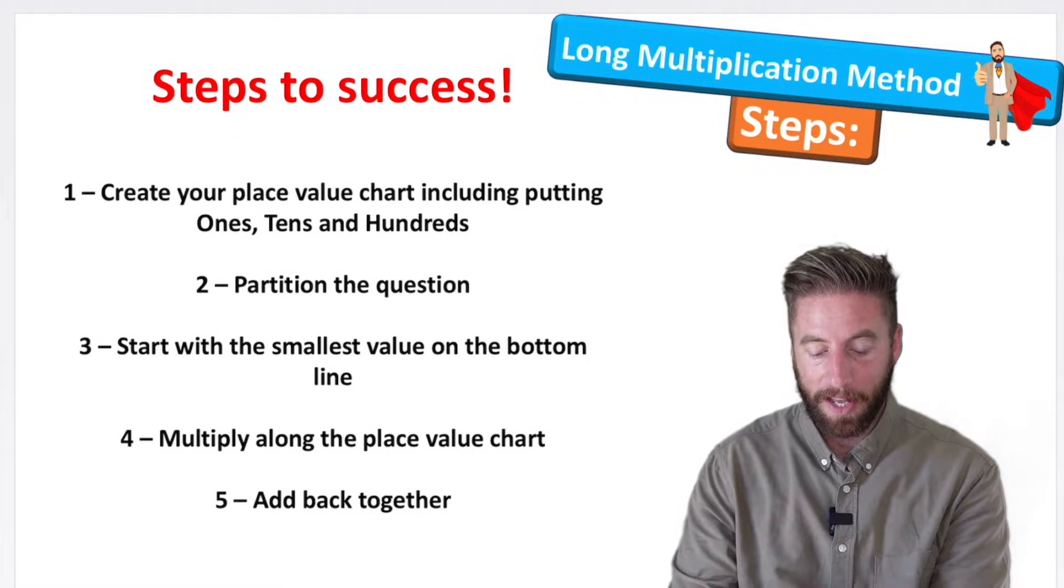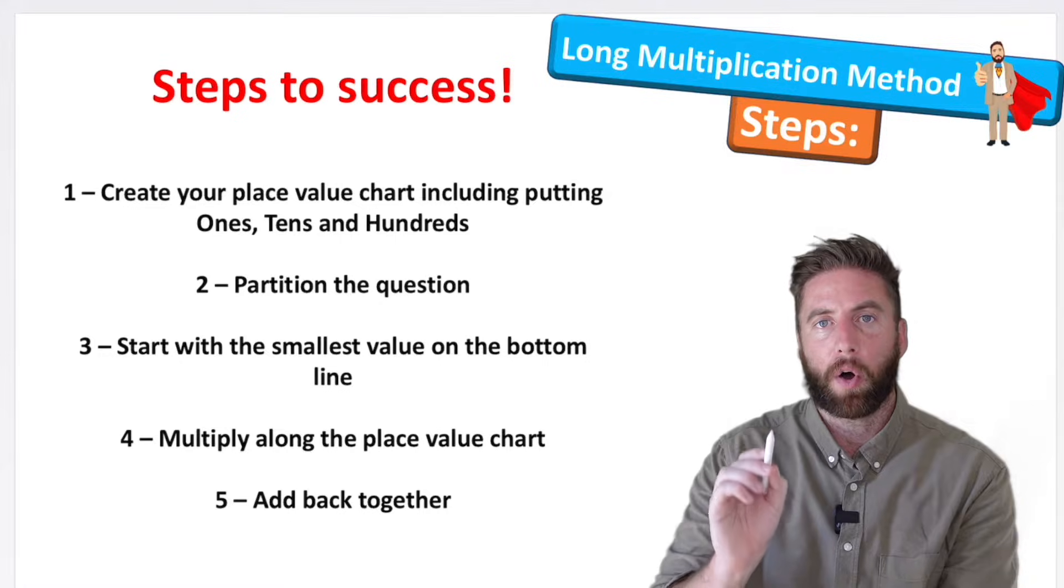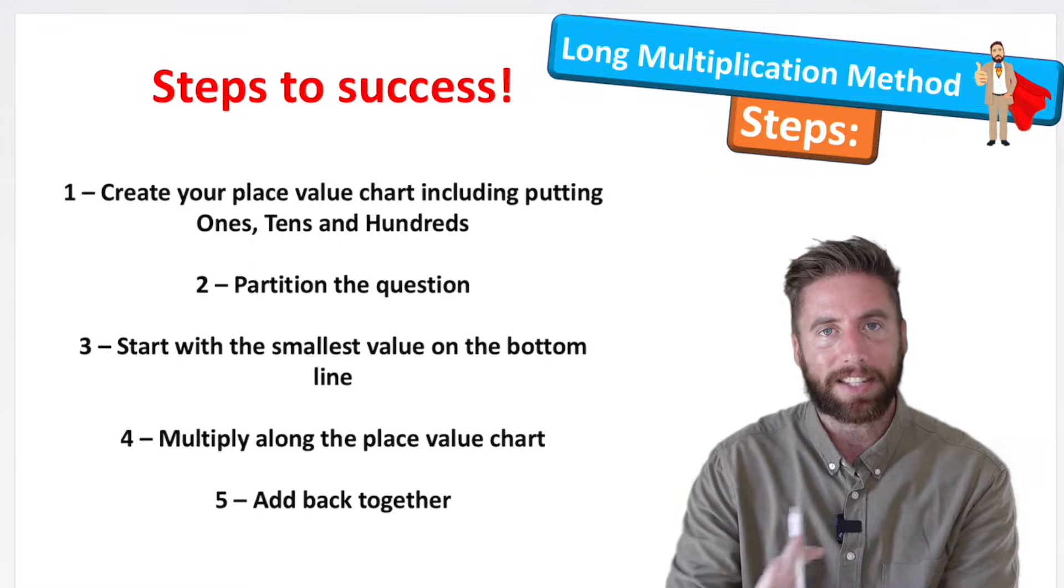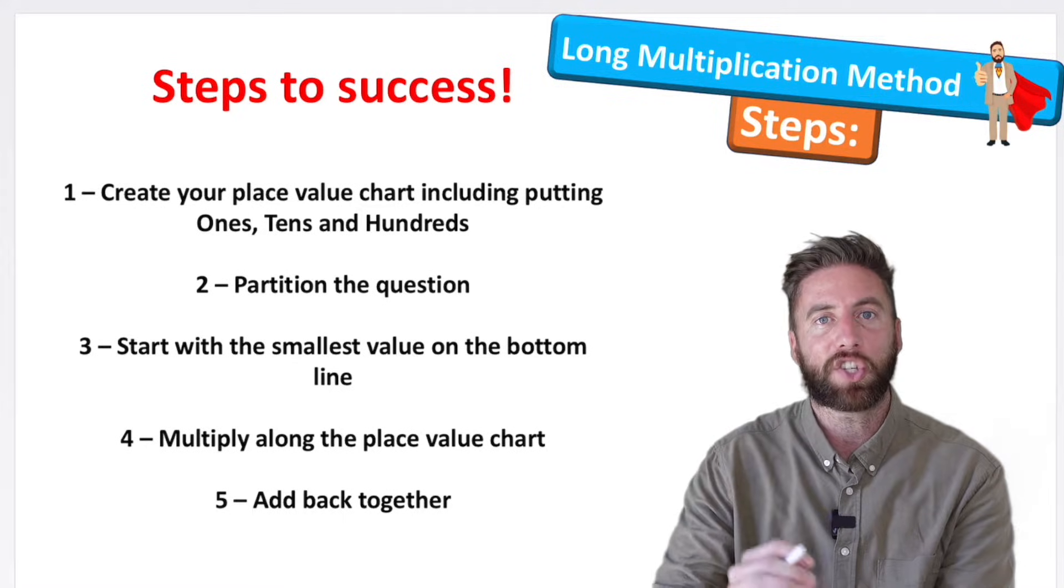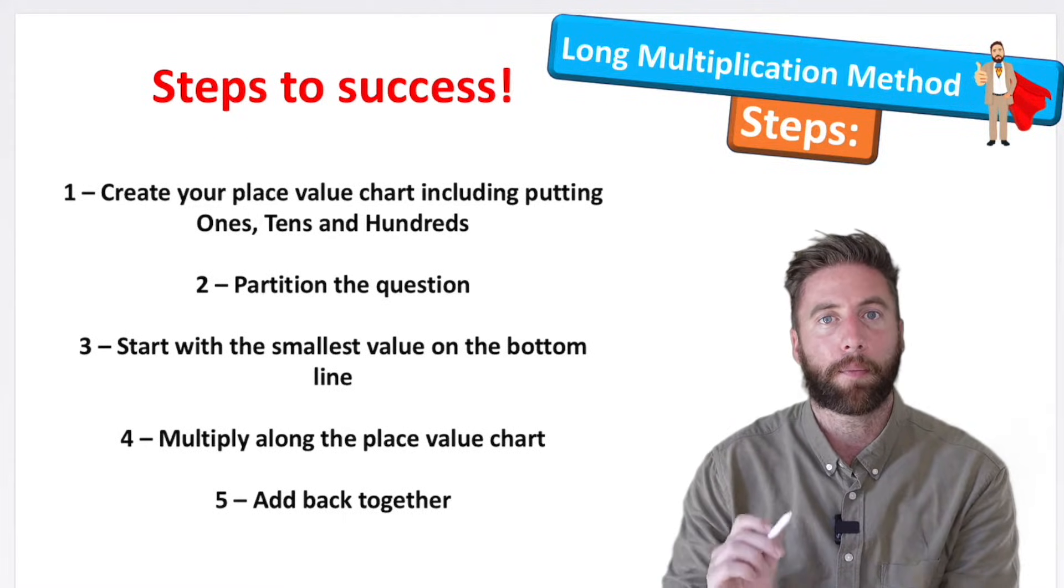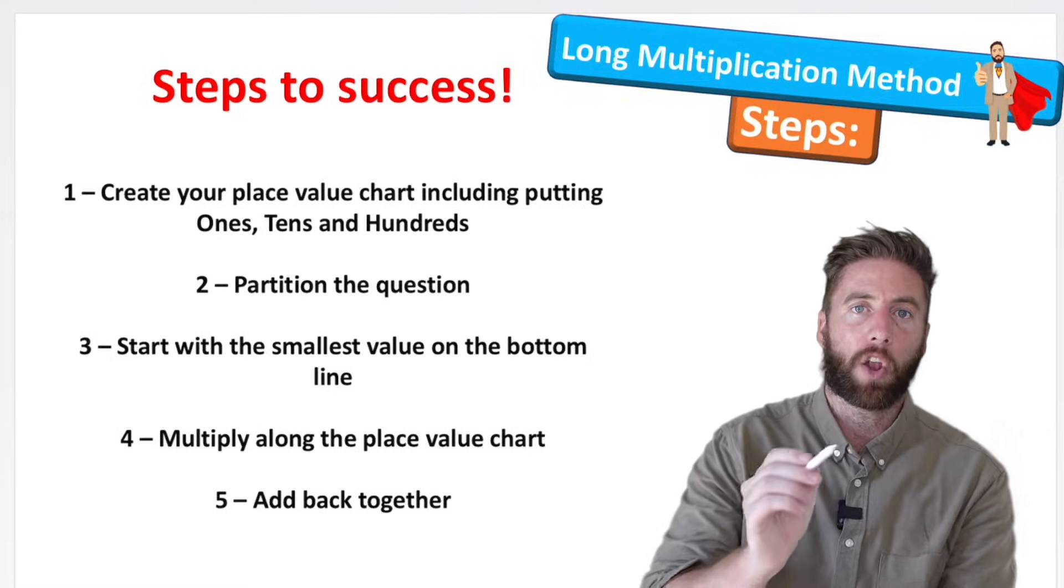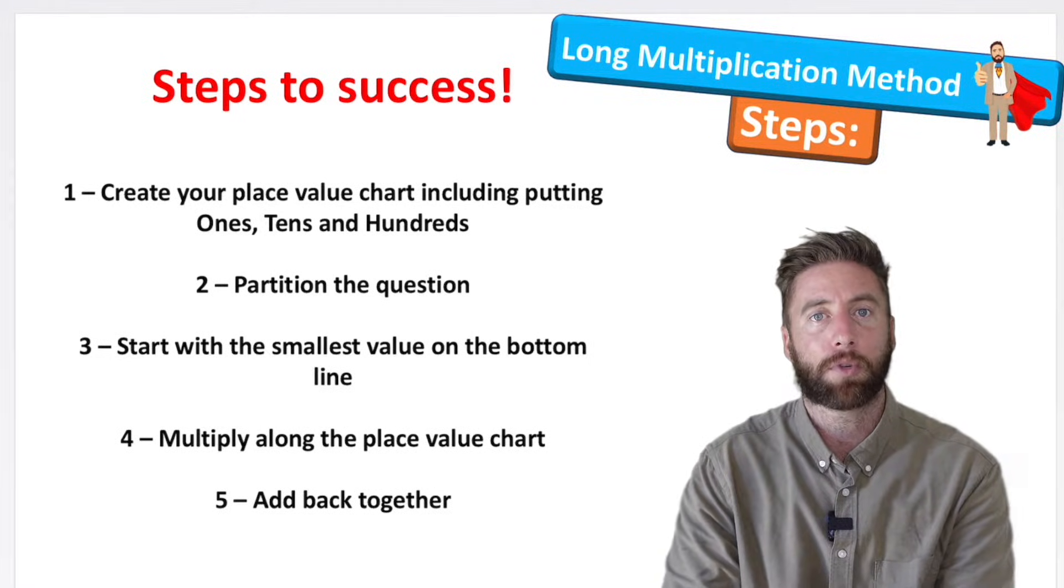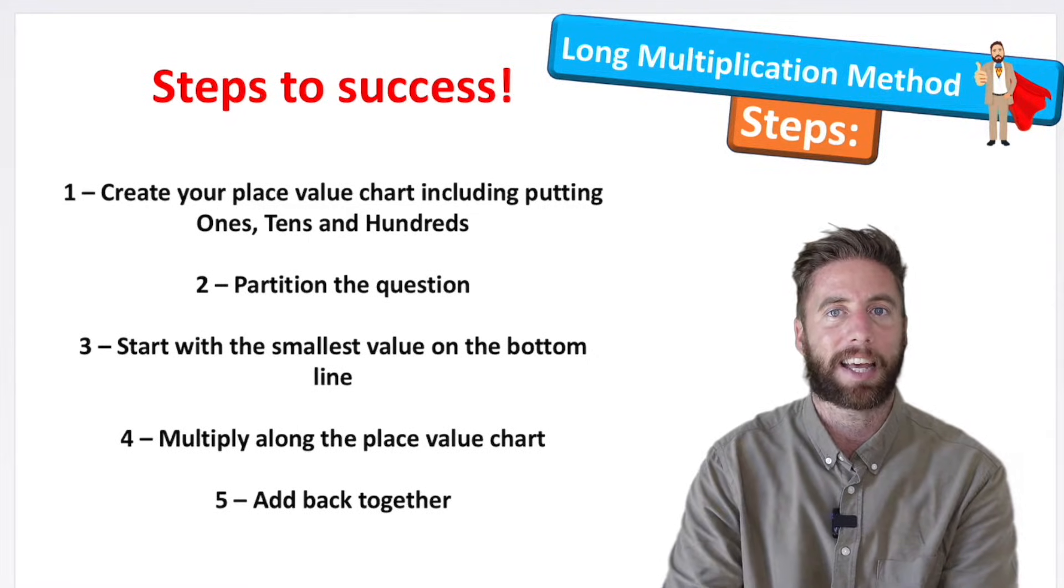Our steps to success today are: first, create our place value chart where we make sure we put our ones, tens, and hundreds labeled so we don't put any numbers in the wrong place. Then we're going to partition our question. Then we're going to start with the smallest value on the bottom row. Then we'll multiply along our place value chart until we finish multiplying all the individual parts, before we finally smash it back together to get our final answer.